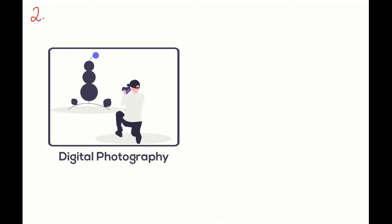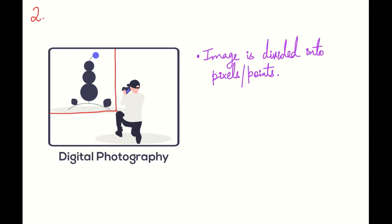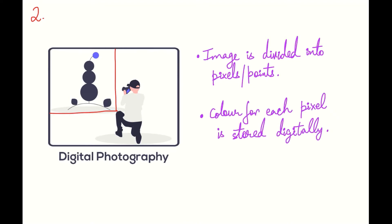Next, let us consider the case of digital photography. Suppose we have taken a photo of this view. What does the camera do to store this image? The whole image is divided into points or pixels, and this idea comes from coordinate geometry. The color for each pixel is stored digitally by the camera. So, if you look at the current picture, this point has black color stored, this has white, and this has blue. Adding everything gives us back the whole photo.